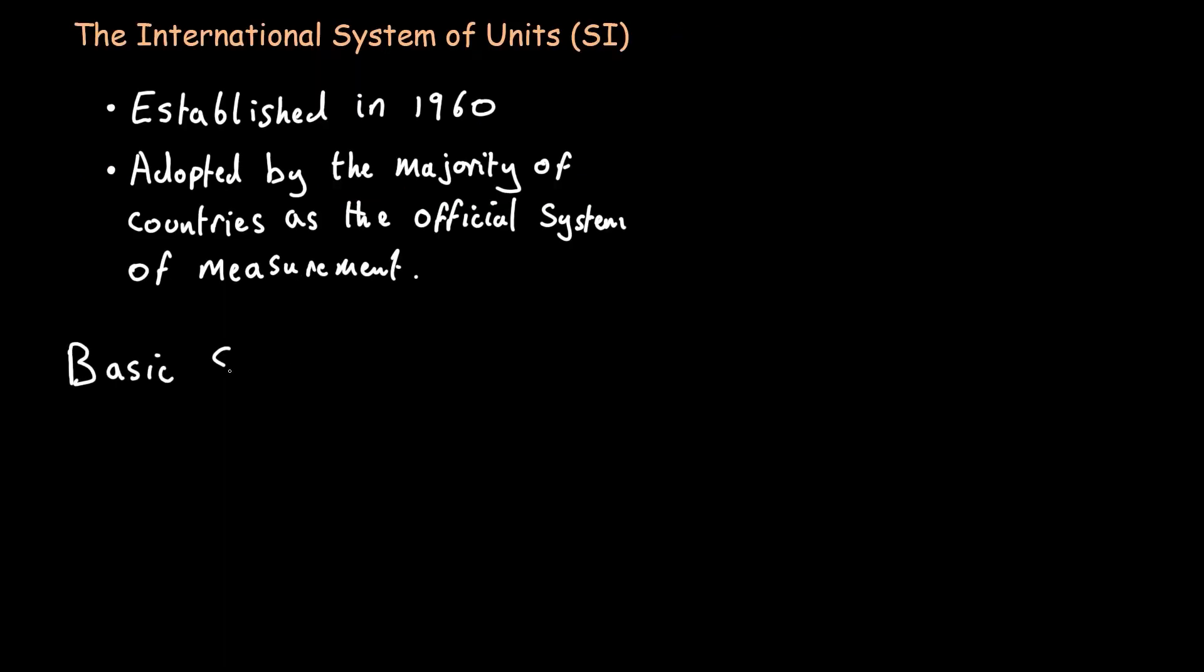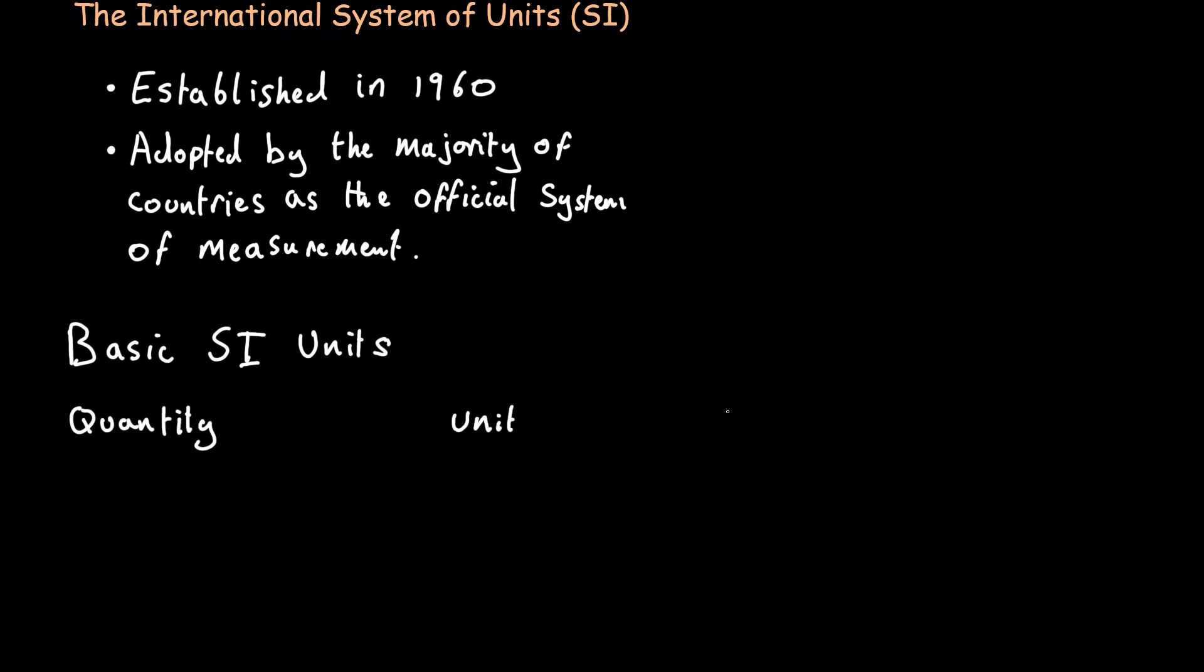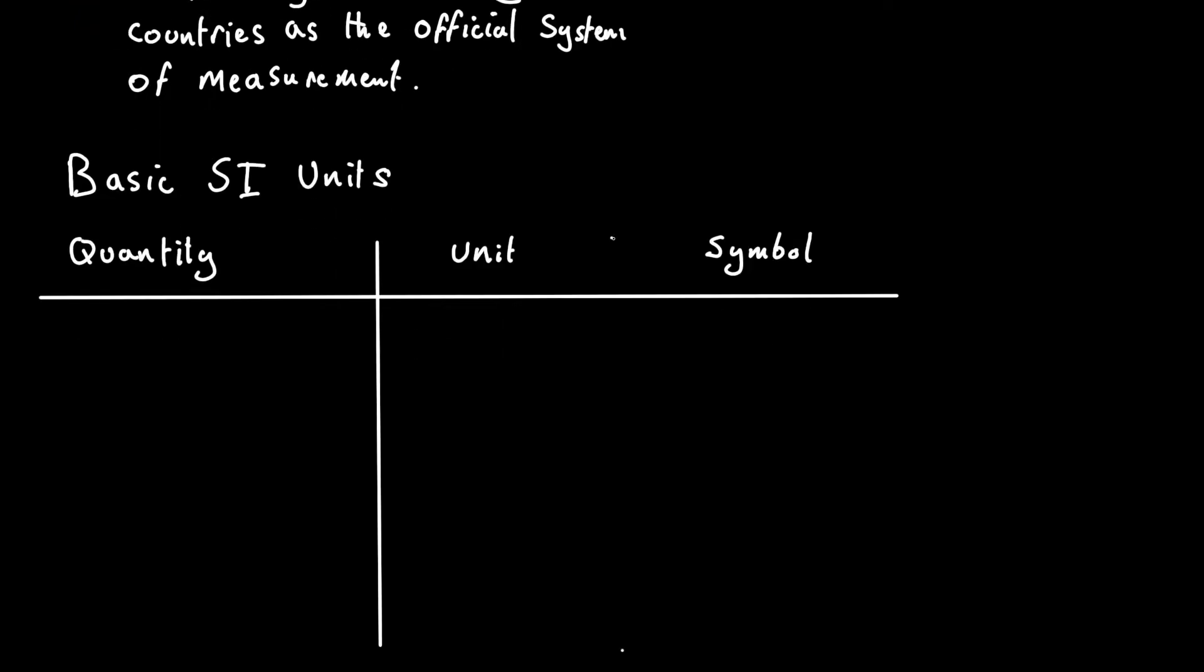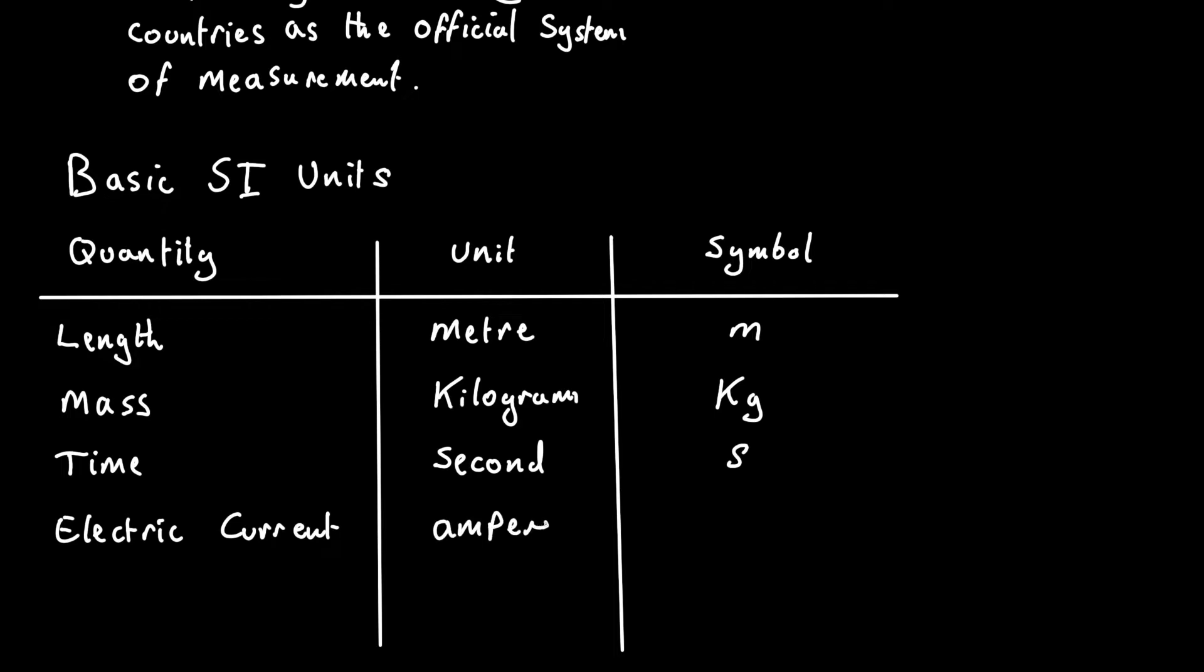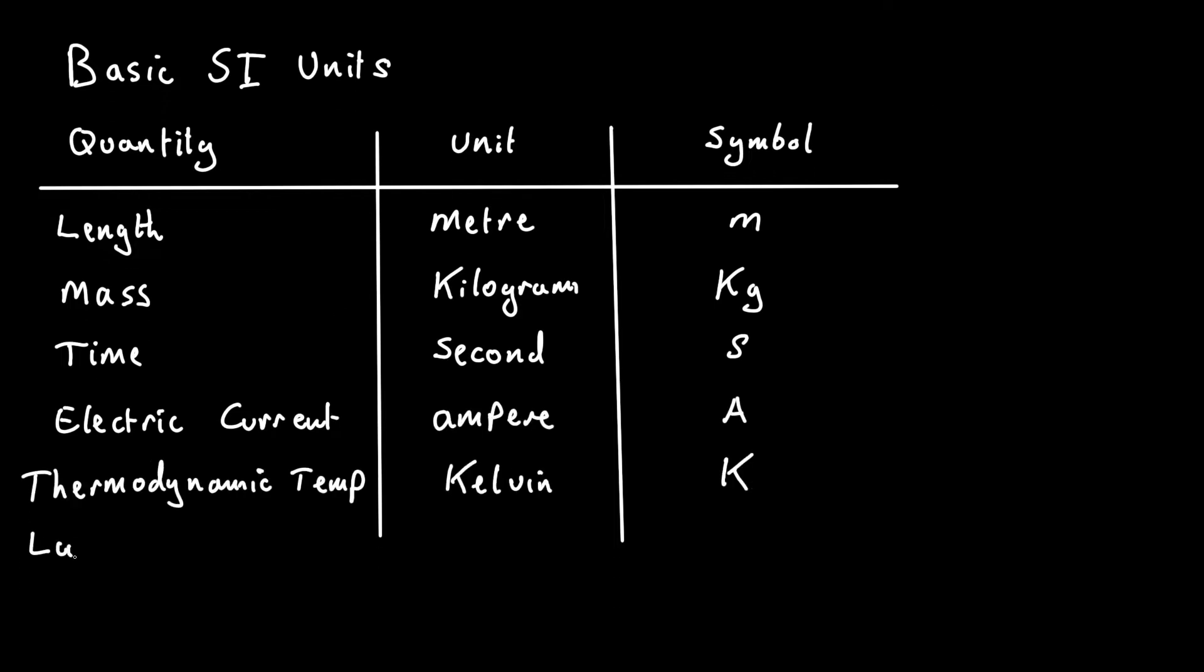The international system of units have seven basic units. These are length, mass, time, electric current, thermodynamic temperature, luminous intensity, and amount of substance.